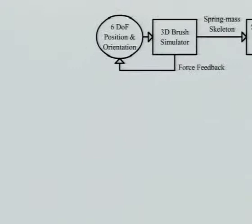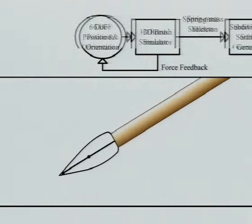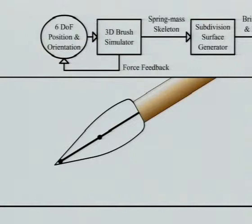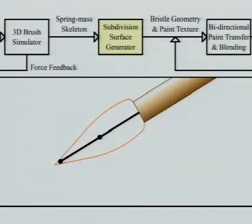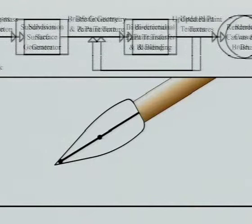The haptic device provides the 6-degree orientation of the brush to the system and sends force feedback to the user. The bristles of the brush are modeled with a spring-mass particle system skeleton, surrounded by a subdivision surface to represent its actual extent. The brush deforms, as expected, upon collision with the canvas.